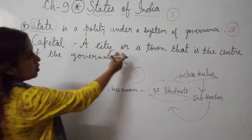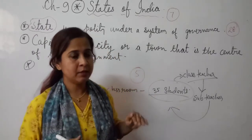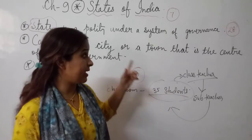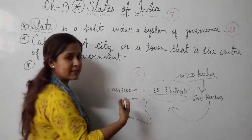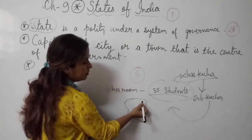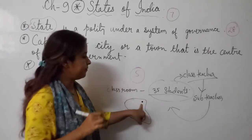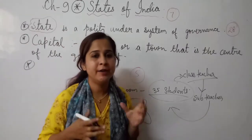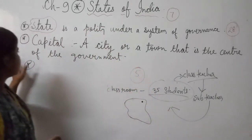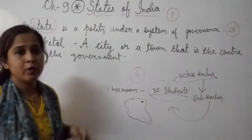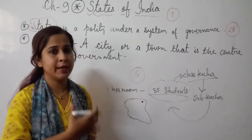Capital means a city or town that is the center of government — all government work is done there. When you see the political map of India, you will find all 28 states each having its own capital marked with a black circle. So this is all about states and capitals. In the next slide, I will take some random states and match them with their related capitals.